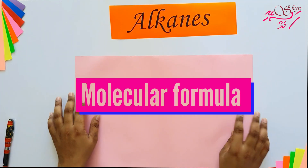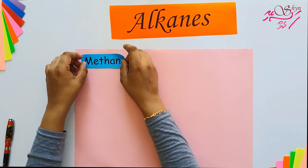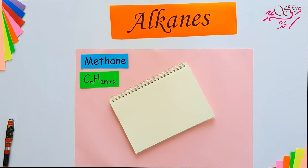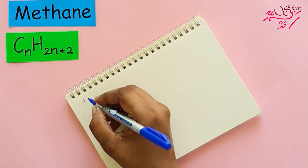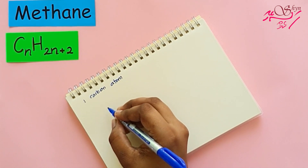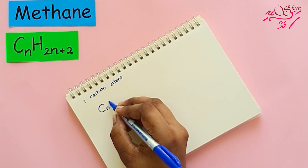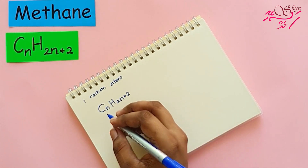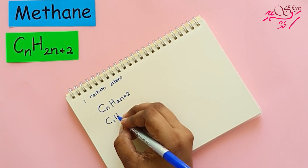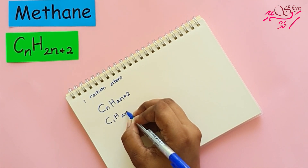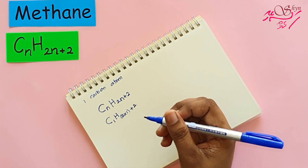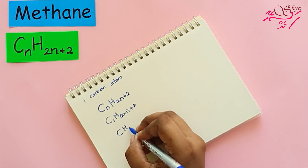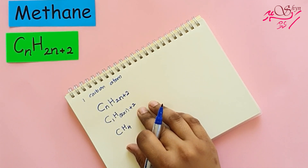Now let's use the general formula of alkane to find the molecular formula of the first four alkanes. Let's start with methane. The general formula is CₙH₂ₙ₊₂ and the number of carbon atoms is 1. Remember, N is the number of carbon atoms. Replacing N with 1: C₁H₂⁽¹⁾₊₂. We don't write the 1, so it becomes CH₄. This is the molecular formula of methane.